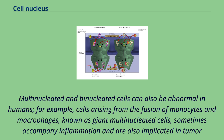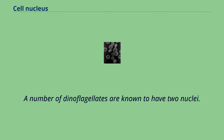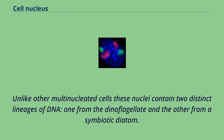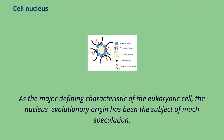A number of dinoflagellates are known to have two nuclei. Unlike other multinucleated cells, these nuclei contain two distinct lineages of DNA — one from the dinoflagellate and the other from a symbiotic diatom. As the major defining characteristic of the eukaryotic cell, the nucleus's evolutionary origin has been the subject of much speculation. Four major hypotheses have been proposed to explain the existence of the nucleus, although none have yet earned widespread support.